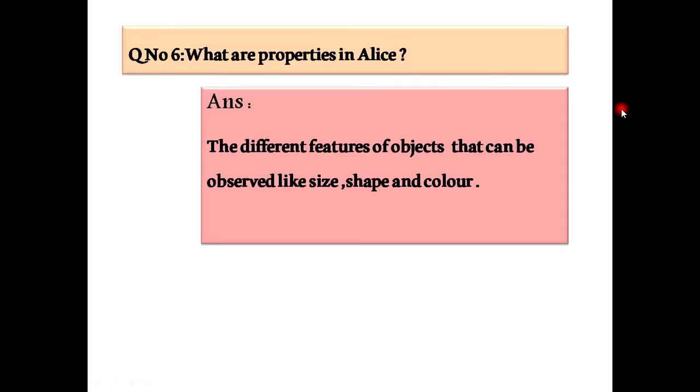Question number six: What are properties in Alice? The different features of objects that can be observed, like size, shape, and color.